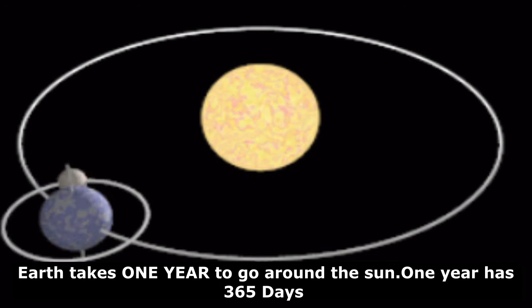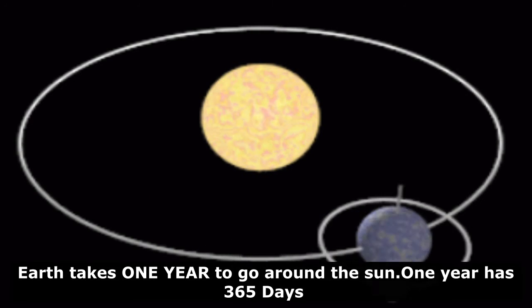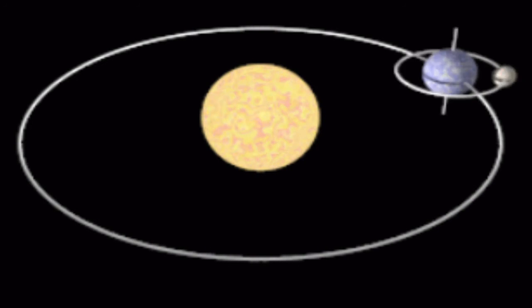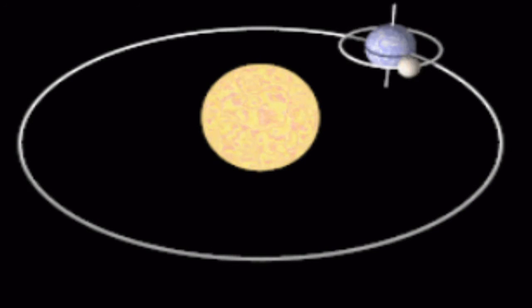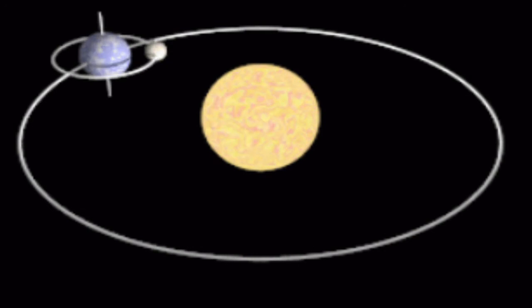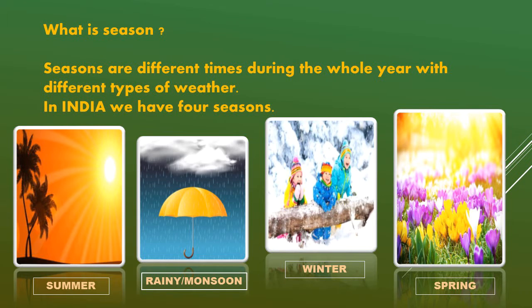Day changes every day as days pass. The movement of earth creates changes in light and darkness and in temperature. Thus, it causes different seasons. Let's discuss what a season is. Seasons are different times during the whole year with different types of weather.